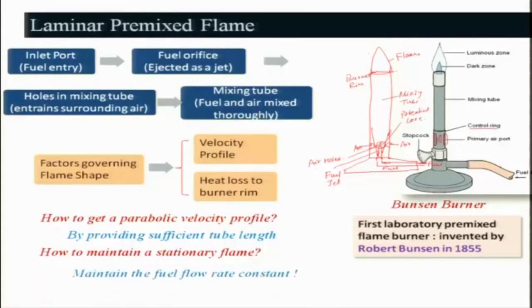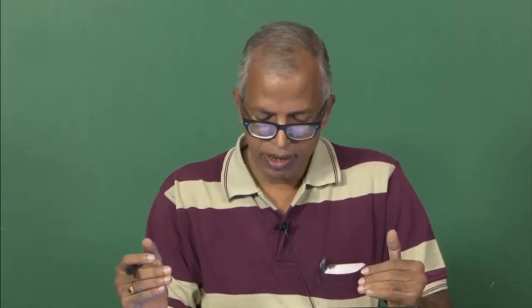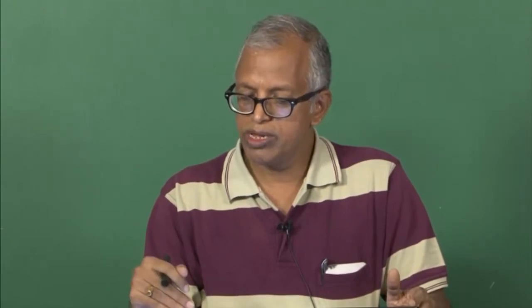To maintain a stationary flame, you keep the fuel flow rate constant. If the velocity exceeds a certain level, the flame will blow out. If the fuel flow rate is too low, the flame will travel back into the burner — this is known as flashback. We will discuss blowout and flashback in more detail later.